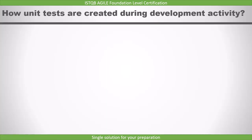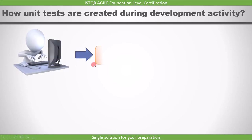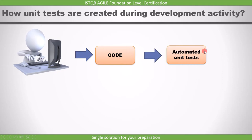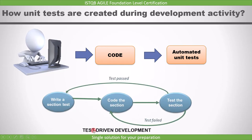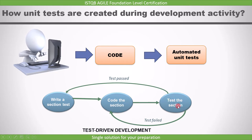Let's now see how unit tests are created during development activity. Typical developer work products on Agile projects include code. Agile developers also often create automated unit tests. These tests might be created after the development of code. There are different approaches to perform unit testing. We will explain one here: test-driven development. In this approach, first the test case is created, then the code is implemented. Once code implementation is done, the corresponding test case is executed to test the implemented code.